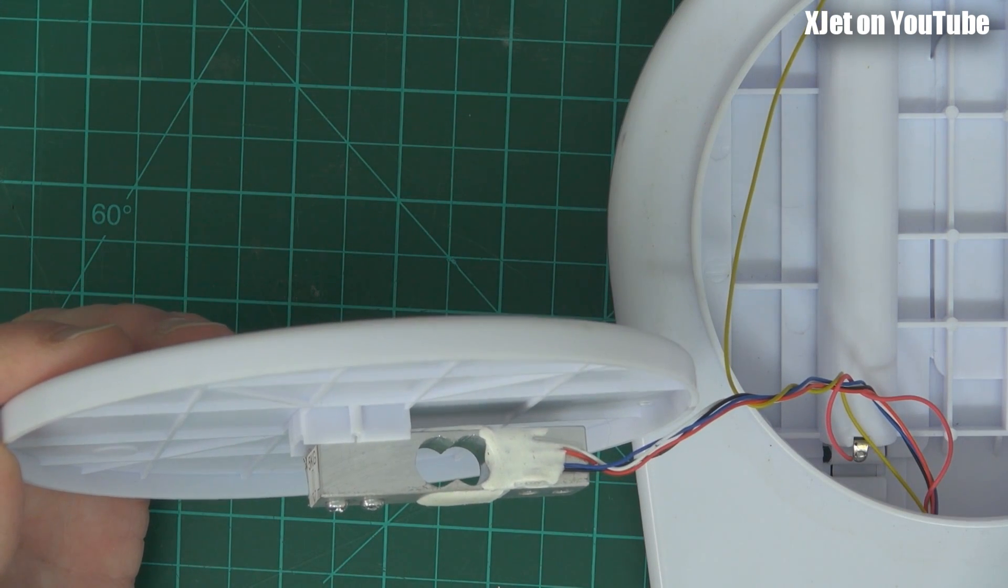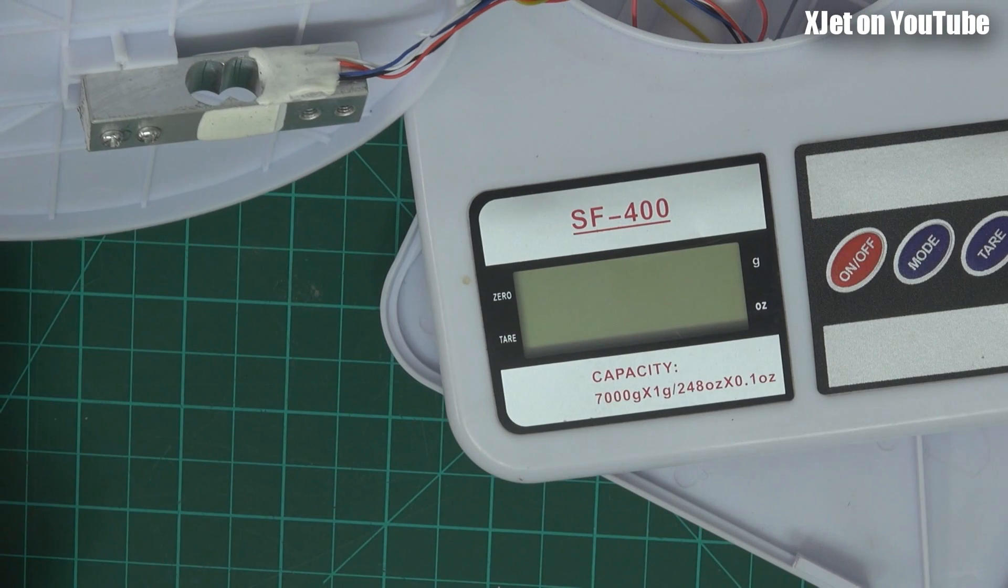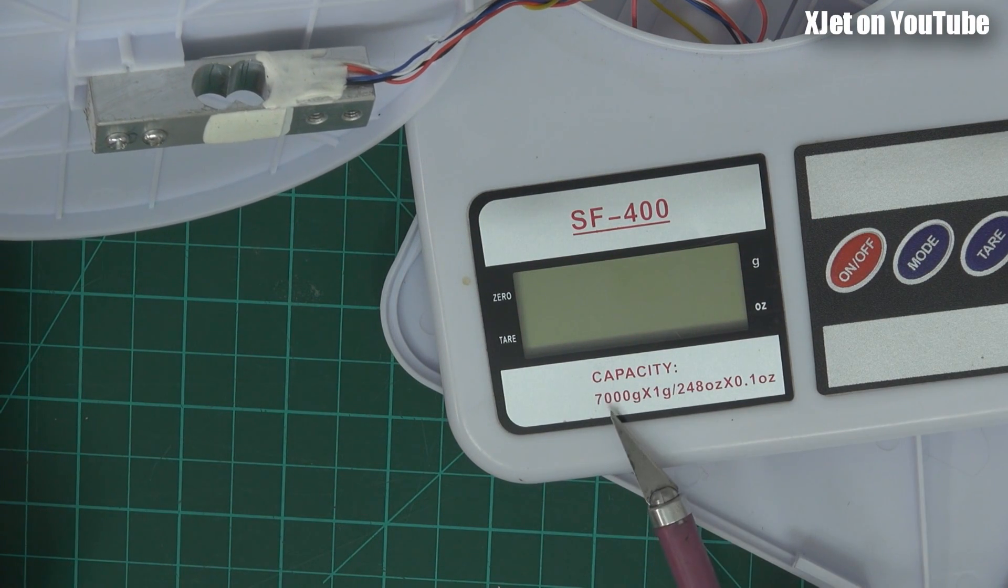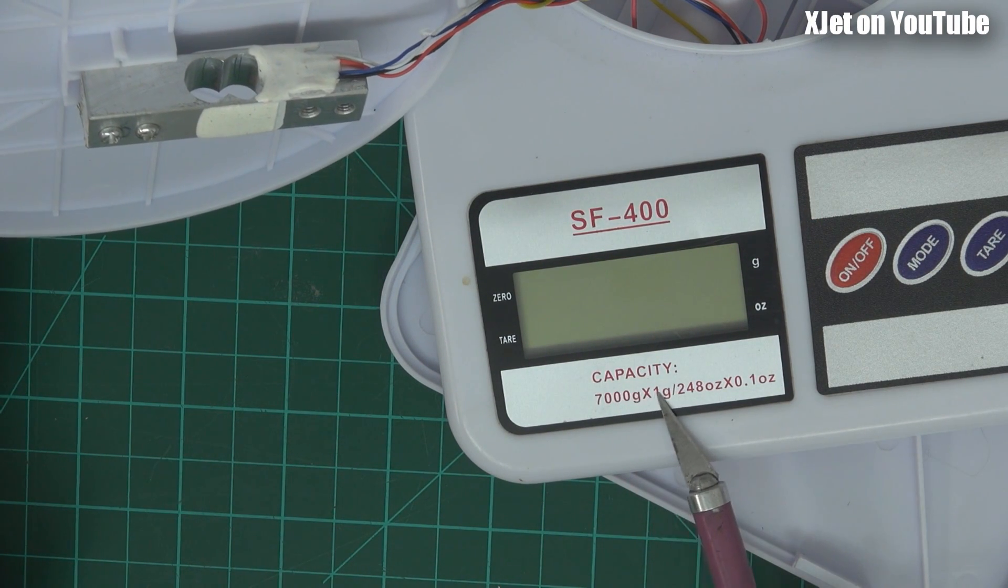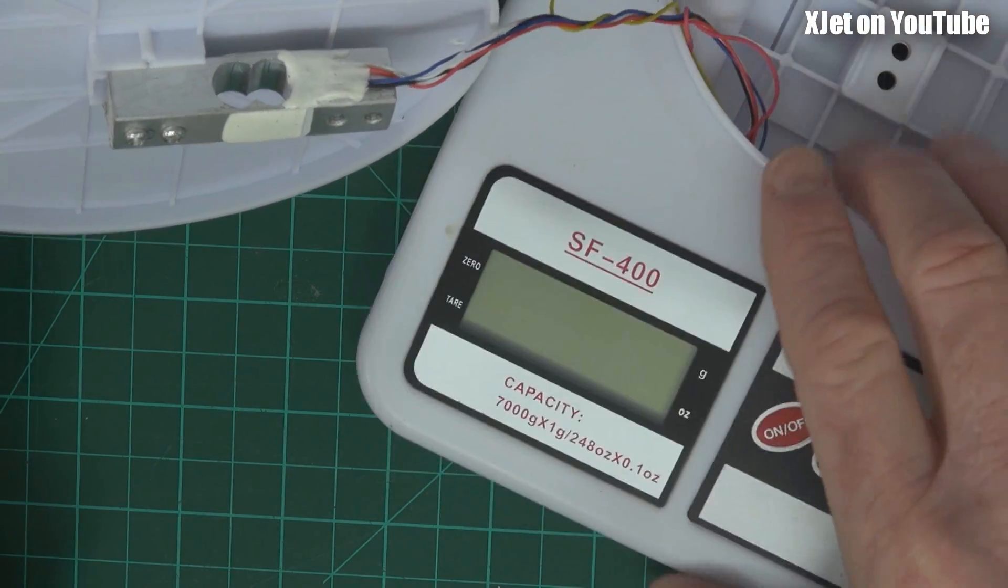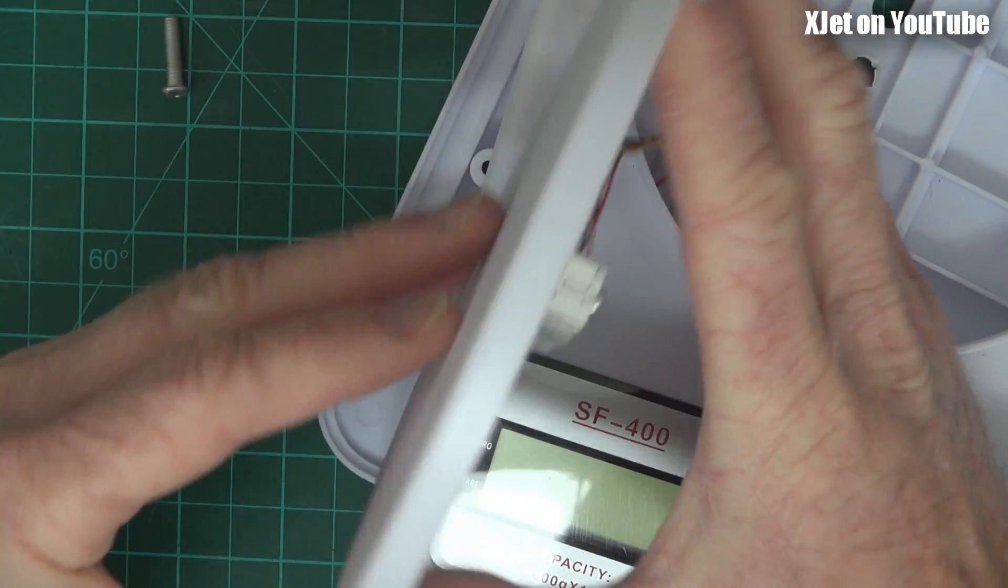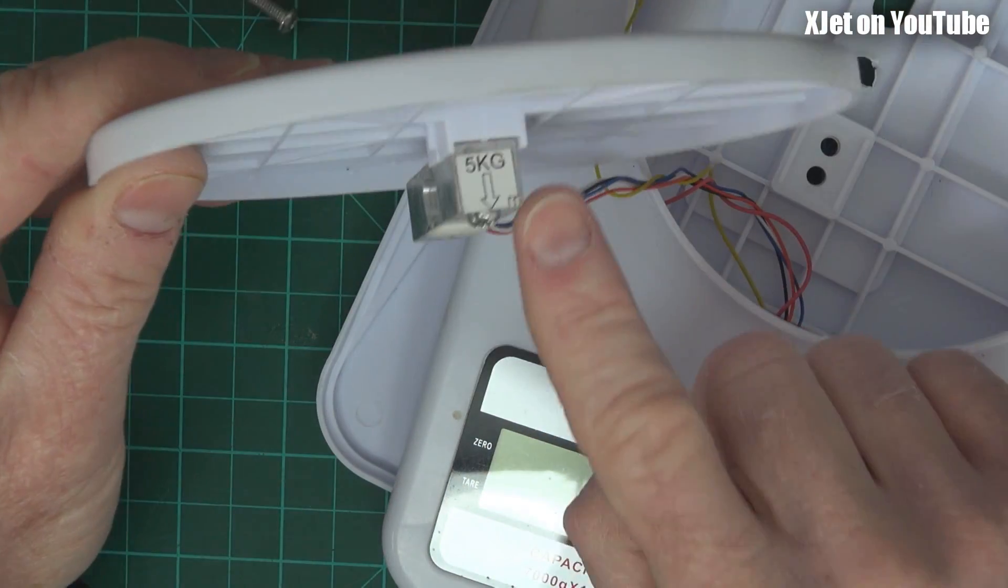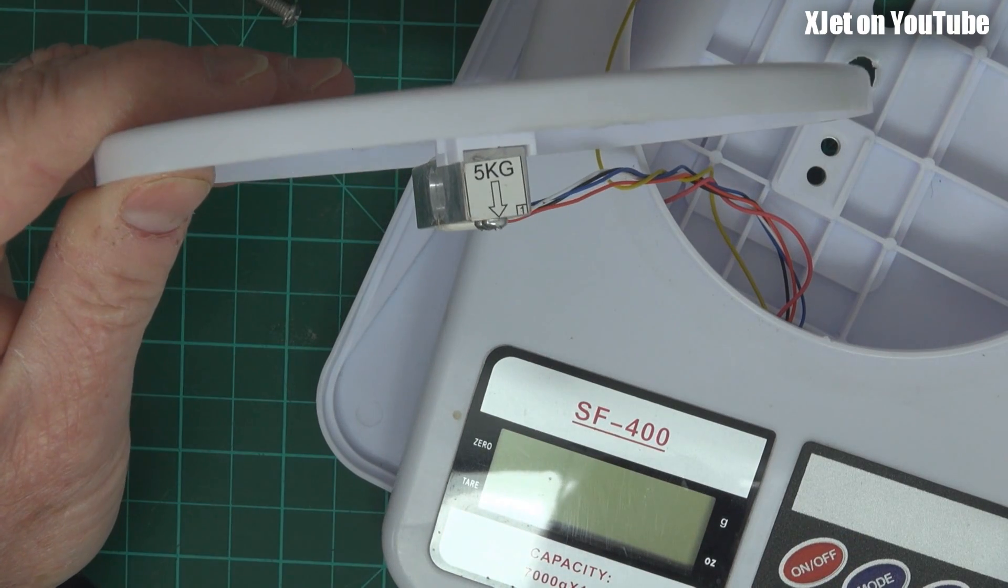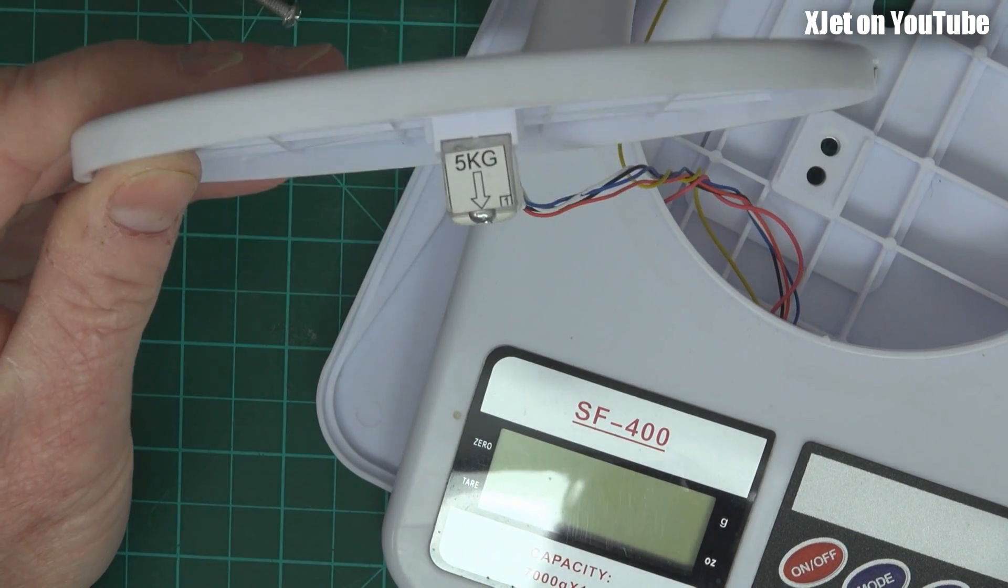Now the heart of any set of scales is what they call the load cell, that's this little thing here. It varies its resistance based on the amount of stress that's applied to it. Generally you securely mount one end and you put the load on the other end, and as this bends, the resistance changes. Remember on the front of the scales, you can see that it says this thing has a capacity of 7,000 grams, that's 7 kilograms. Manufacturers of cheap products would never lie, would they? But if we take a look at the load cell, you can see the load cell says 5 kilograms. So yeah, it's not quite what they claim it to be.